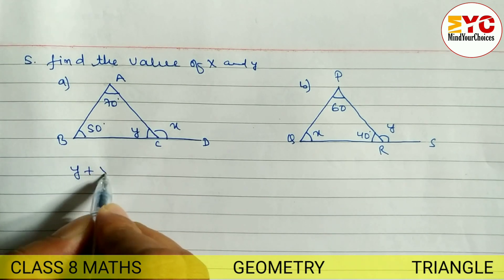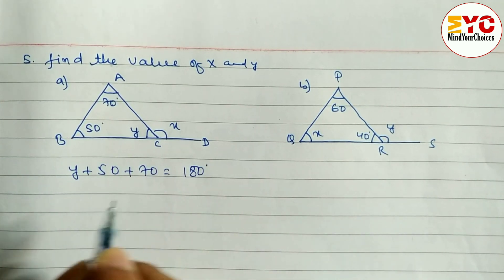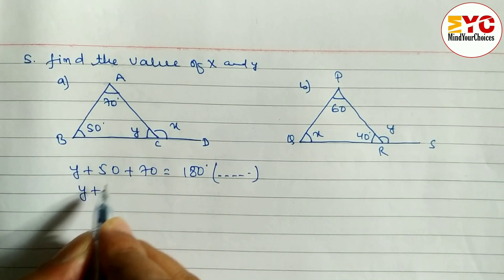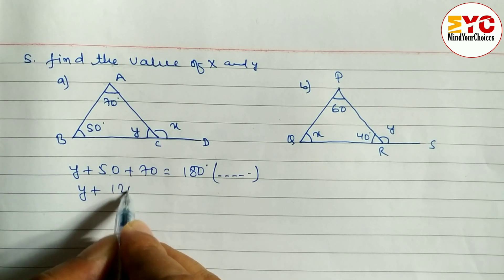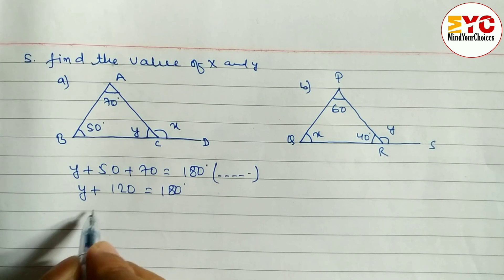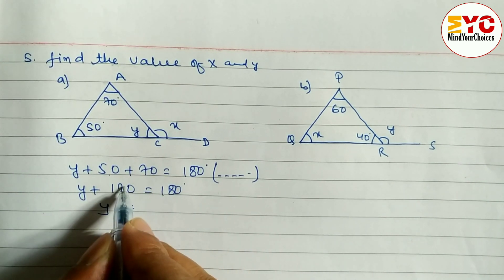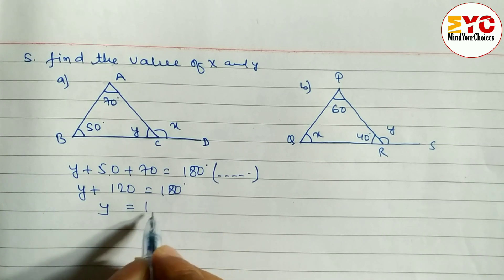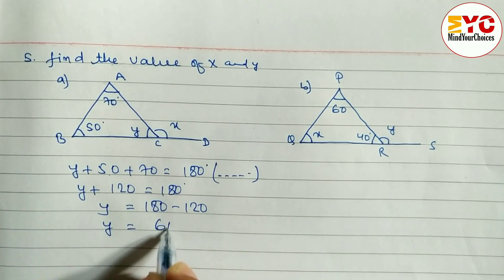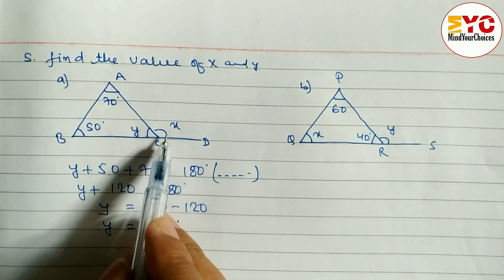When you add these three angles — y plus 70 plus 50 — we get 180 degrees, the sum of angles of the triangle. So we write y plus 50 plus 70 is equal to 180 degrees. Adding 50 plus 70 gives 120, so y plus 120 is equal to 180 degrees. These two are unlike terms so we take 120 to the right side: y is equal to 180 minus 120, and we get y is equal to 60 degrees.